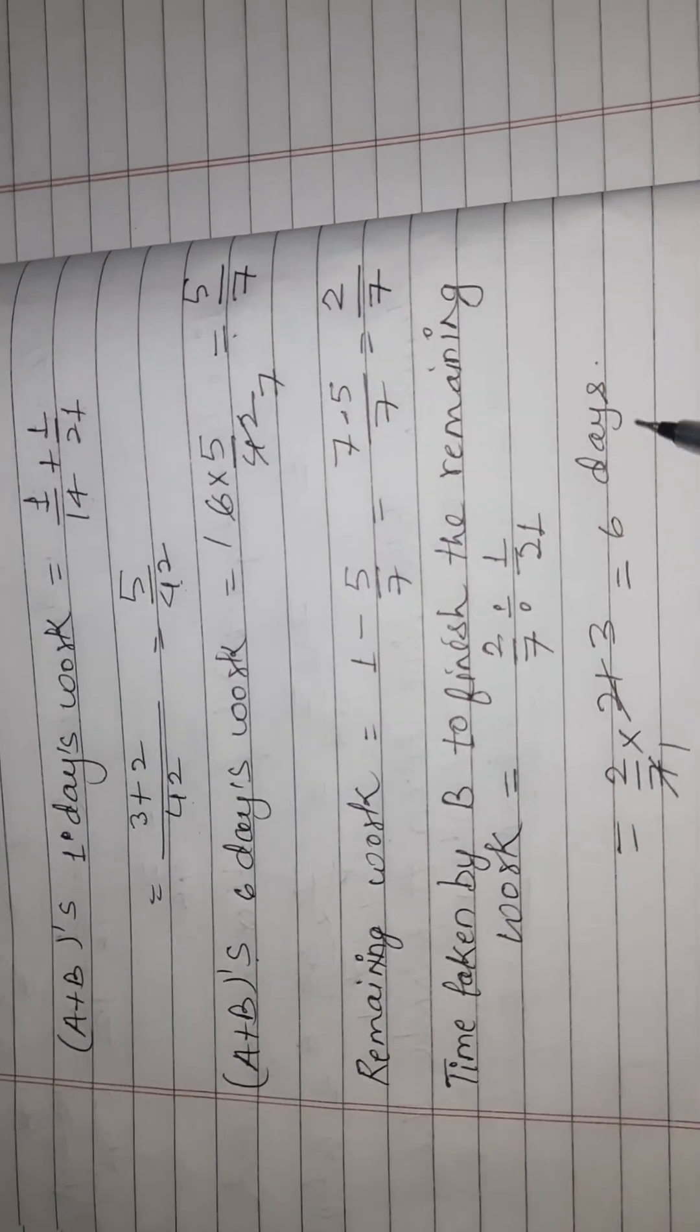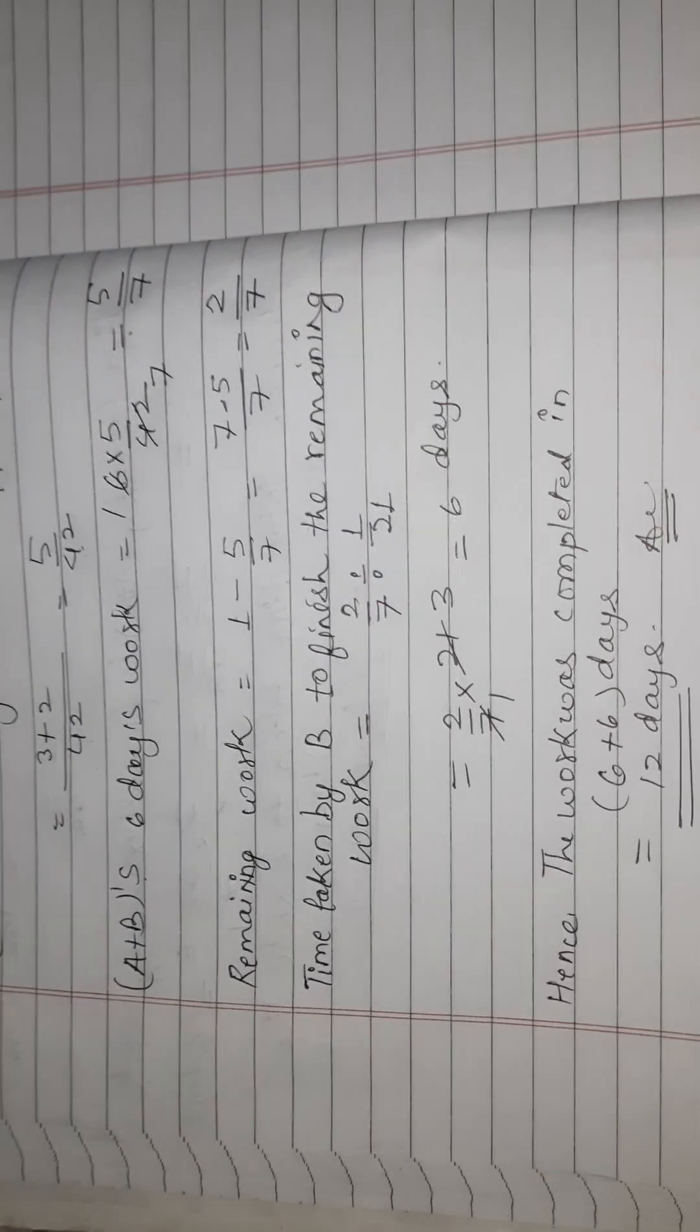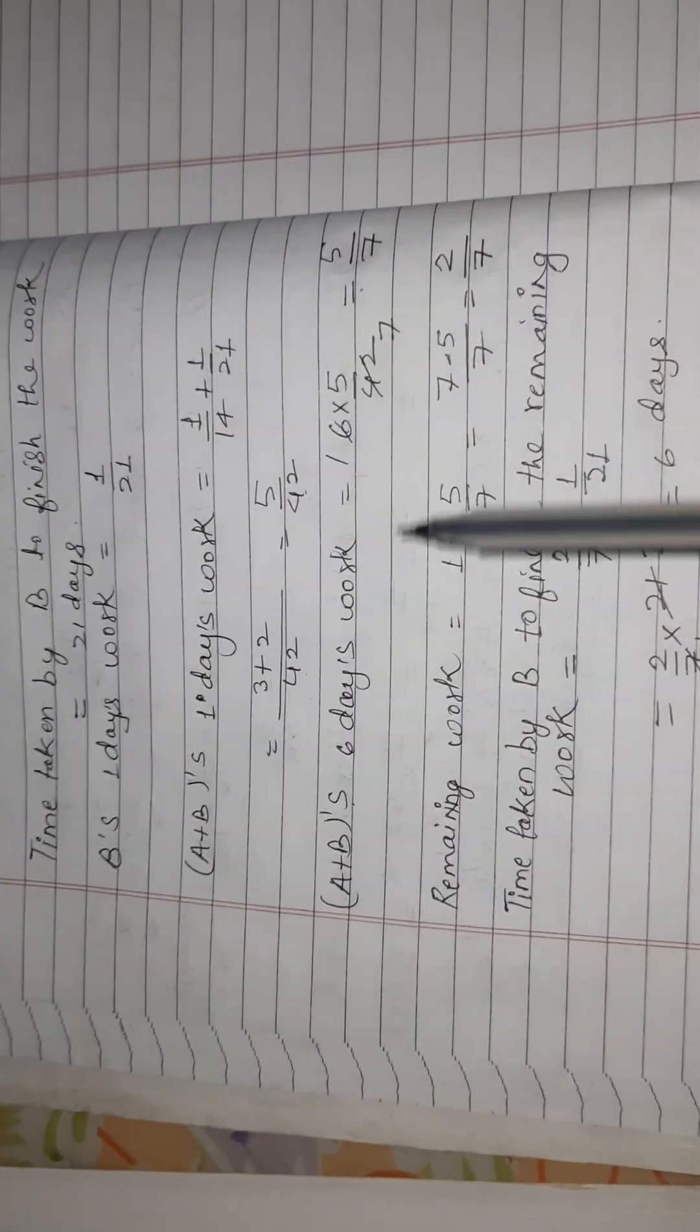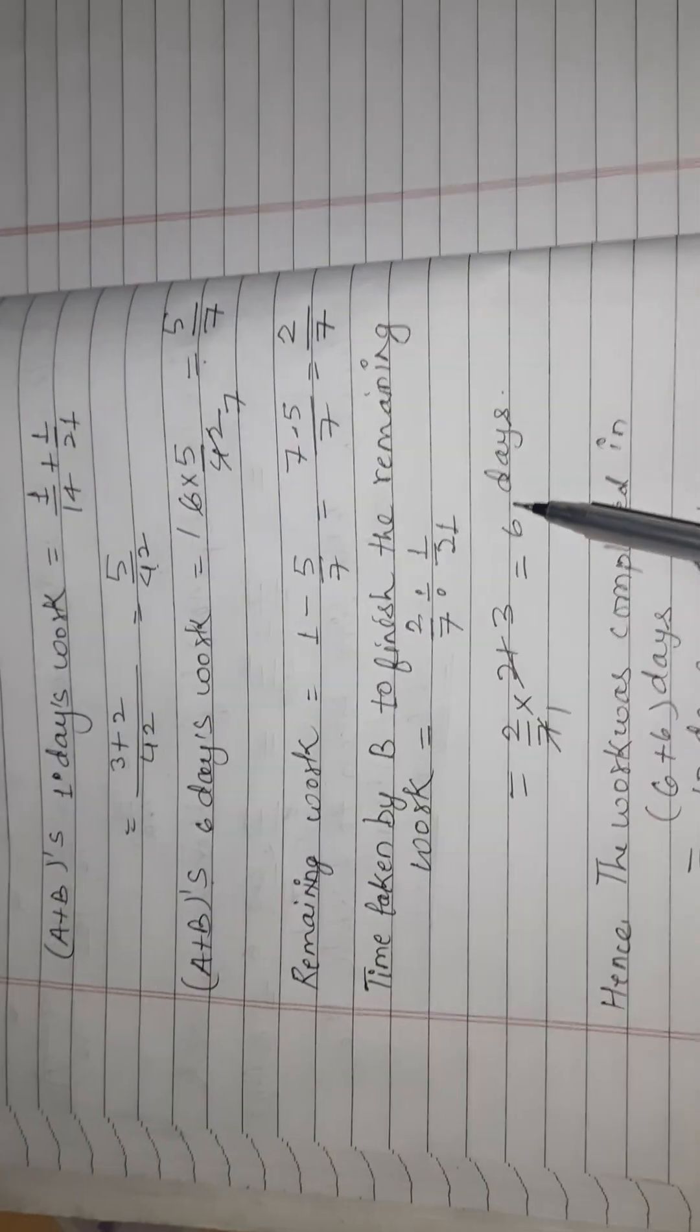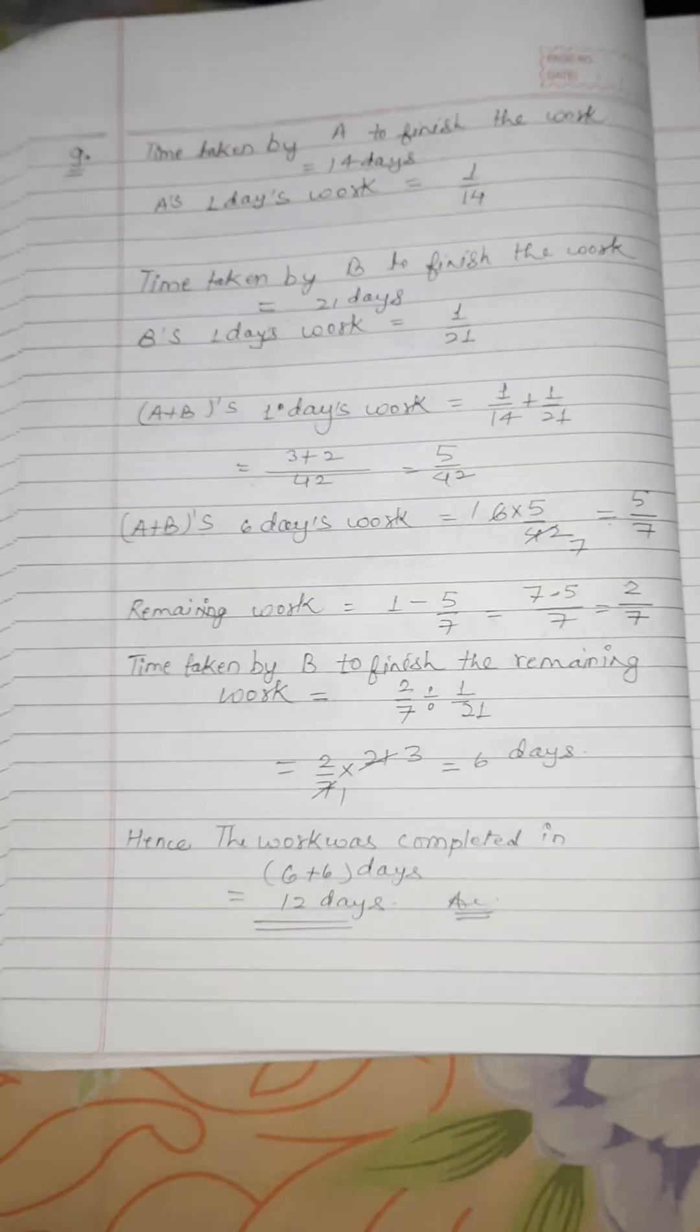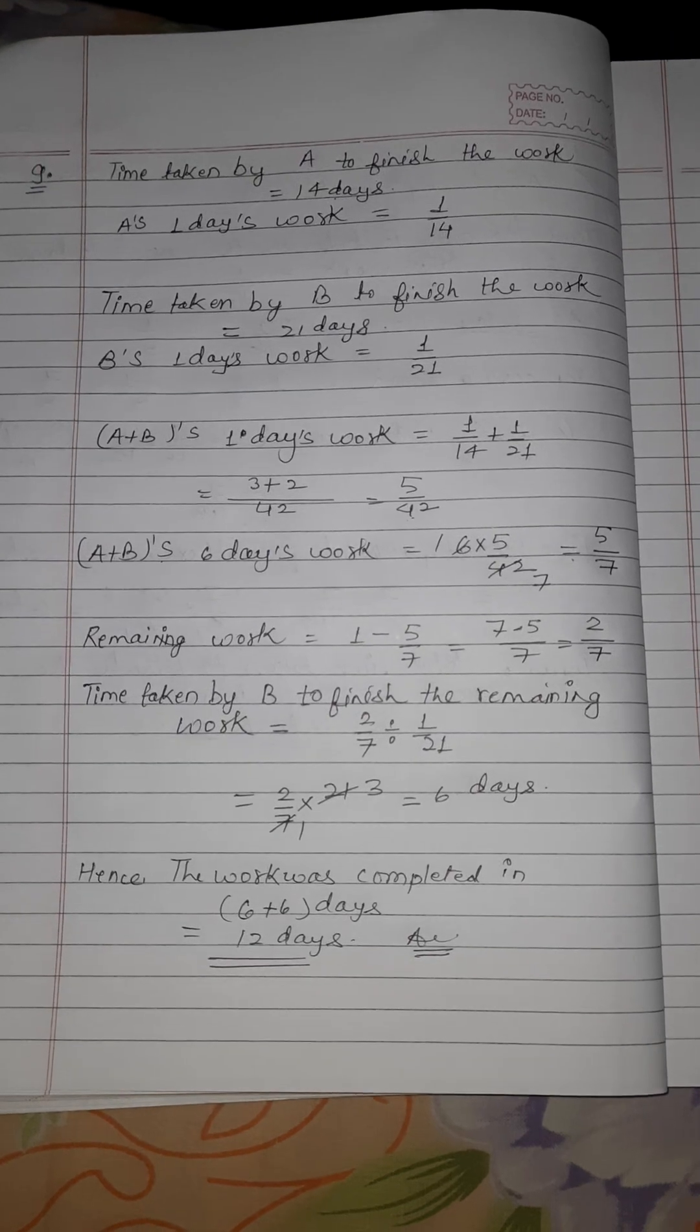B अकेले six days में कर लेगा. अब हमें find करना था कि total time कितना लग रहा है काम को finish होने में, तो 6 दिन पहले यहां A और B एक साथ काम कर चुके हैं, तो 6 दिन यह हो गया और plus 6 दिन B को लग रहा है बचे काम को finish करने. Means 6 plus 6 days is equal to 12 days. The work was completed in 12 days. Okay friends, इस तरीके से हमने इस question को solve किया है. Thank you friends for watching and please do subscribe.